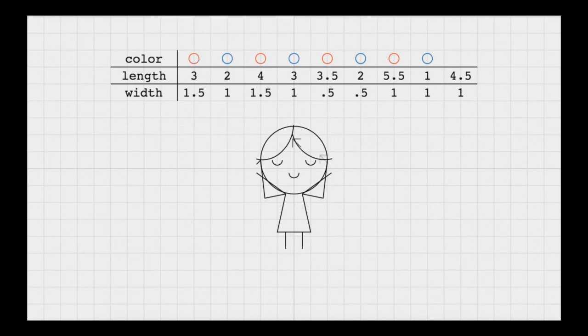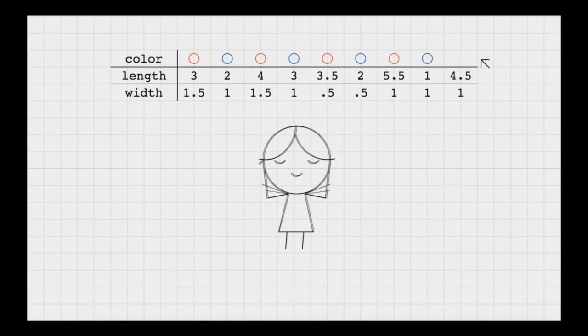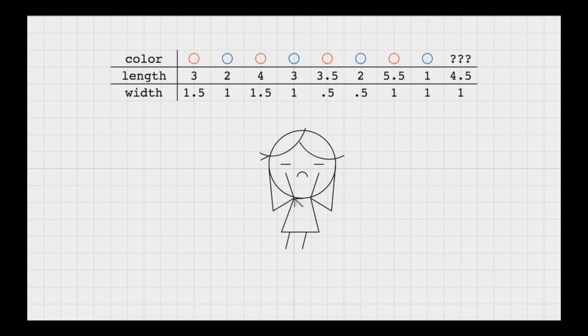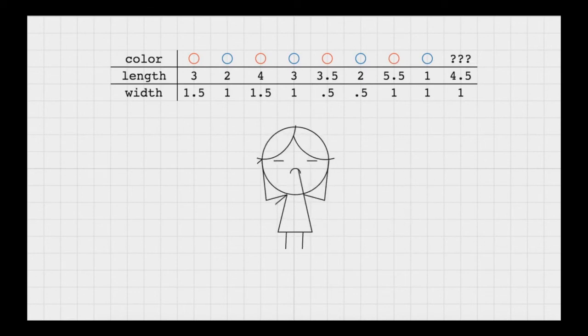So here's her data set. And uh-oh. What is going on here? It looks like she forgot to measure the color or just note down the color of this last flower. That's not good. So now she's a little upset. There's a bit of a mystery here. And she cannot be happy unless her data set is complete.